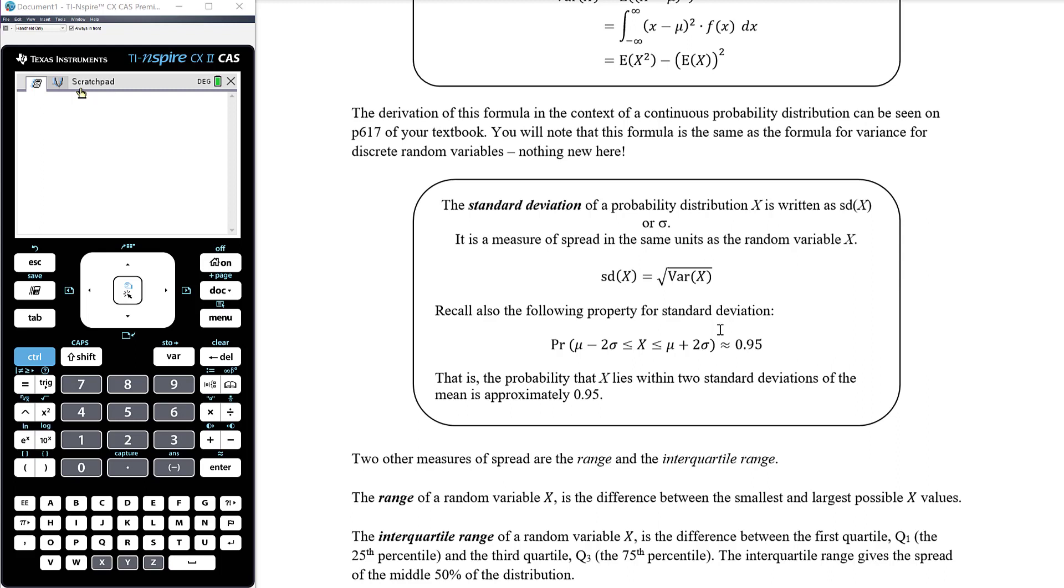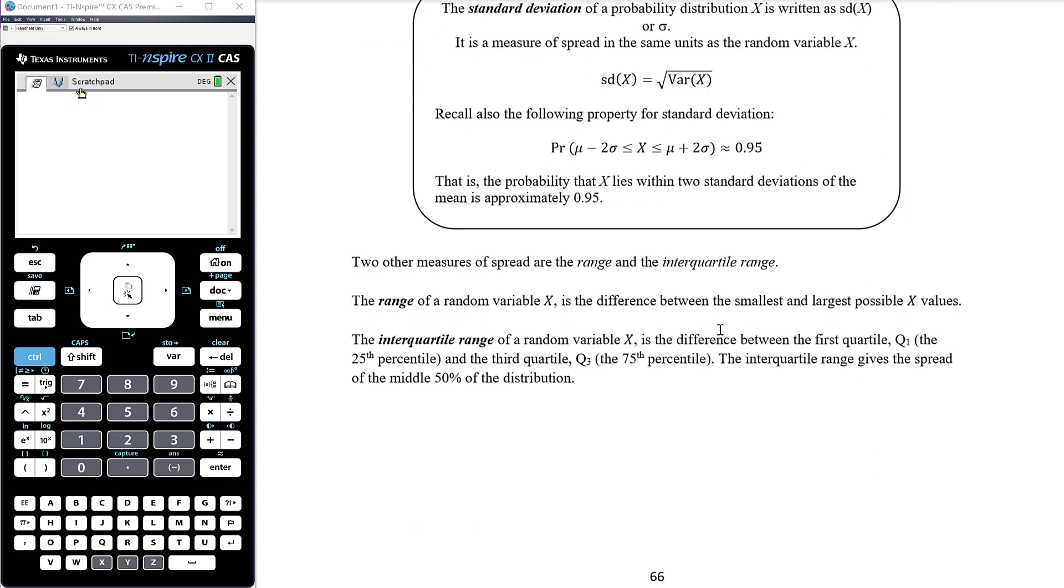And we record this property of standard deviation that for a roughly symmetric distribution, approximately 95% of the distribution will lie within two standard deviations of the mean. Two other measures of spread that we can talk about are the range and the interquartile range. So range being the largest value minus the smallest value, and interquartile range being Q3, the 75th percentile, minus Q1, the 25th percentile. So we've looked at calculating percentiles in the previous video. So we could calculate those and work out interquartile range. The interquartile range of course gives the spread of the middle 50% of the distribution.